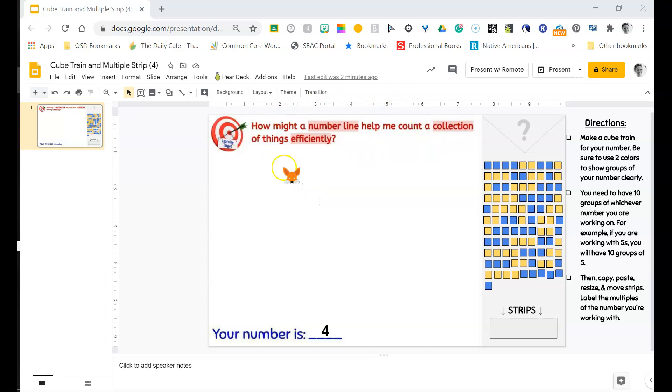So just a reminder of what our guiding question is today. How may a number line help me count a collection of things efficiently?